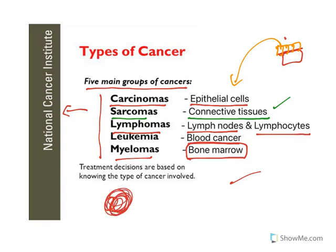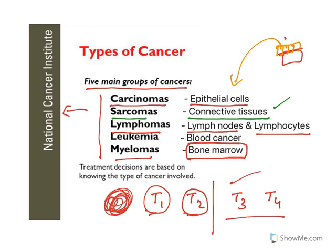Based on tumor size, cancer can be divided into stages T1, T2, T3, and T4. When the tumor is identified in earlier stages, the chances of saving the patient are higher. In later or advanced stages, the chances of mortality are very high.